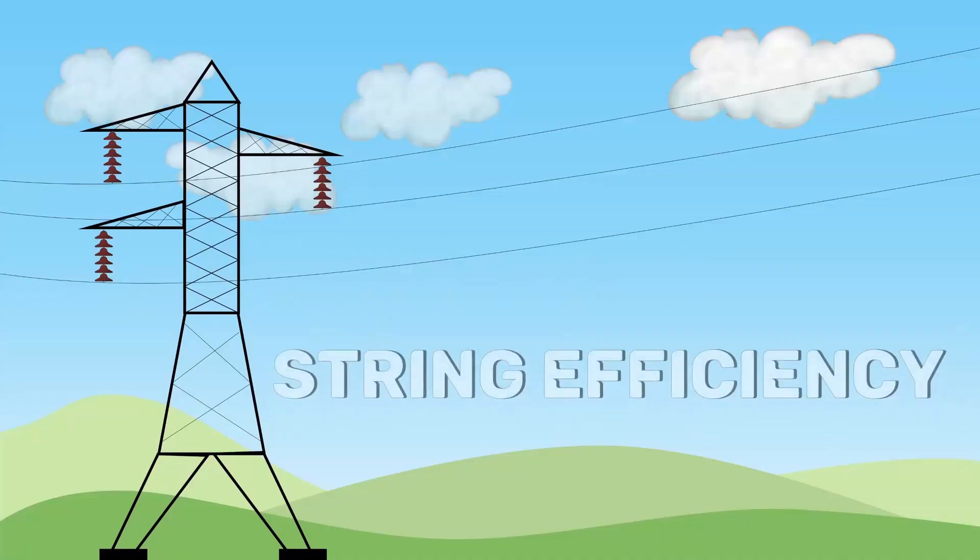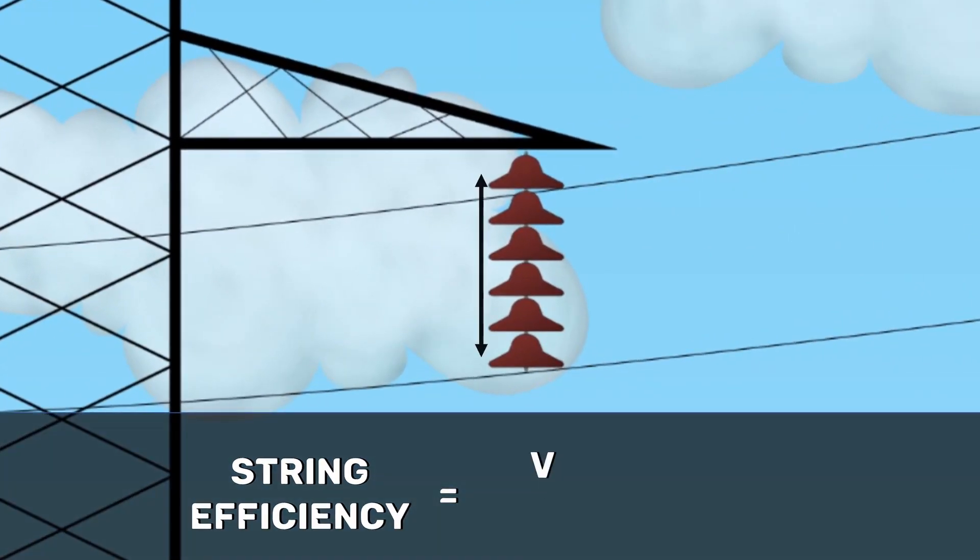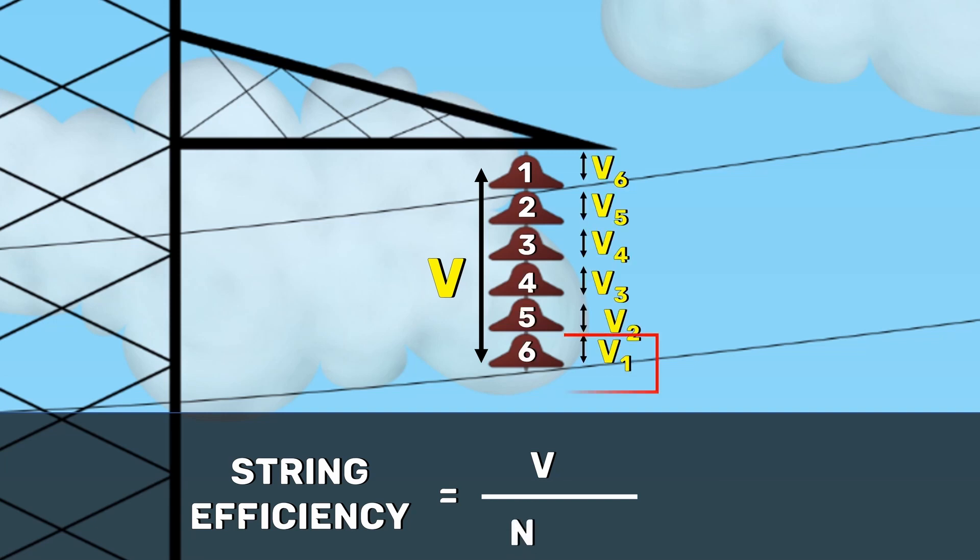In order to avoid this, we need more uniform distribution of voltages. This is usually expressed in terms of string efficiency. It is the ratio of voltage across the whole string to the product of a number of disc and the voltage across the disc nearest to the conductor.